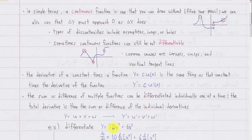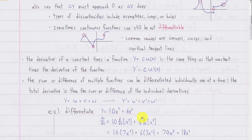For example, we want to differentiate 10x to the 7th plus 6x cubed. First, we split the derivative for each individual term, taking the derivative of each term separately. Then we move the constants out of the derivative operator, differentiate the powers of x, and multiply them by the constants again and add them up.